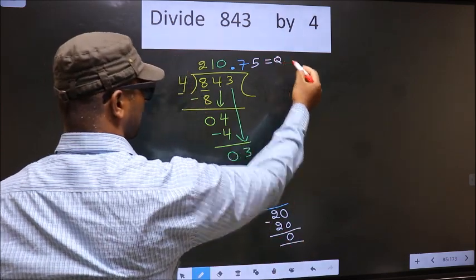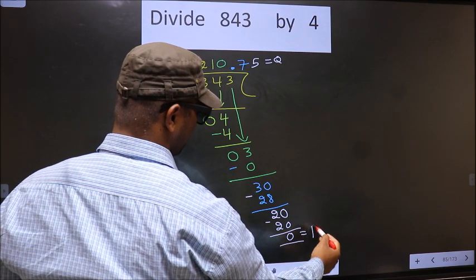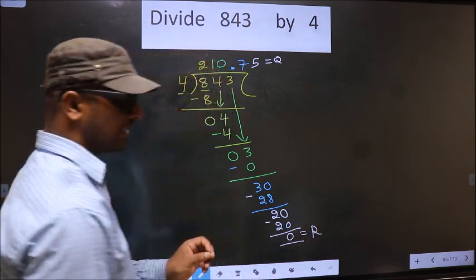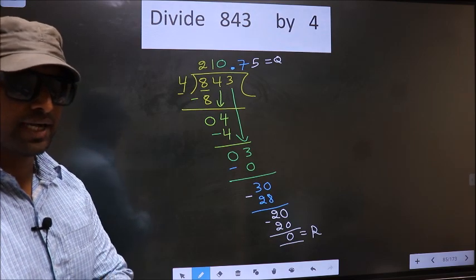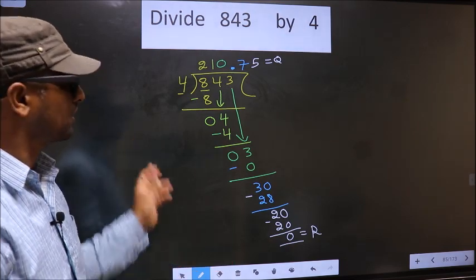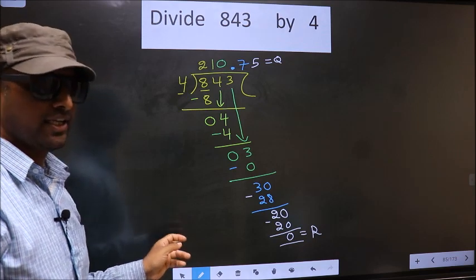So, this is our quotient and this is our remainder. Did you understand where mistake happens? You should not do that mistake. Am I clear?